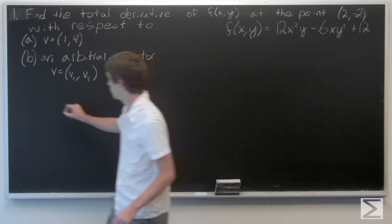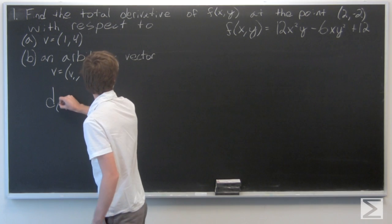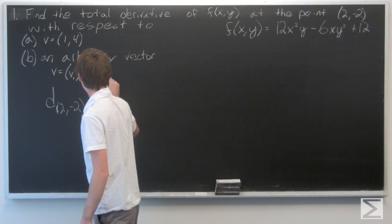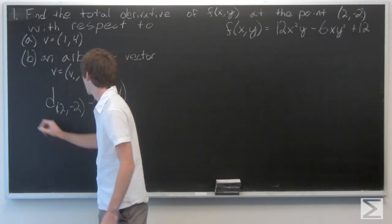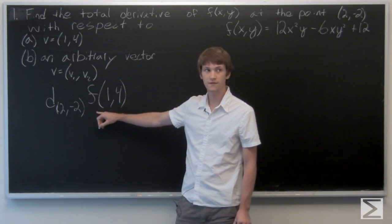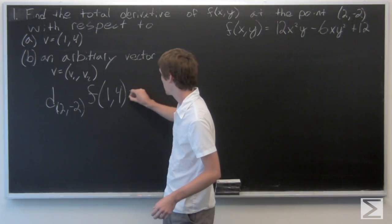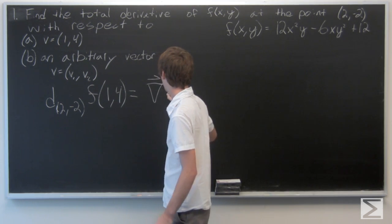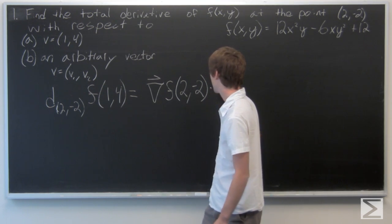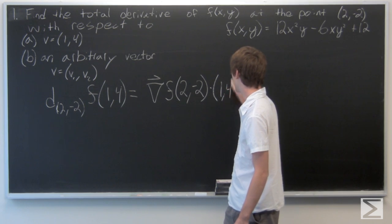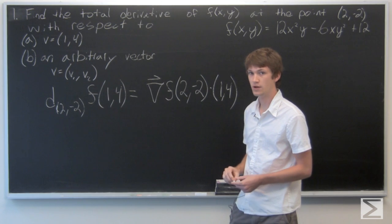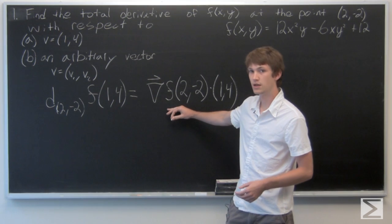So we want to find the total derivative at the point (2, -2) of the function f with respect to the vector (1, 4), which we recall is just the gradient vector of f at (2, -2), dotted with the vector (1, 4). So we can calculate the gradient vector.